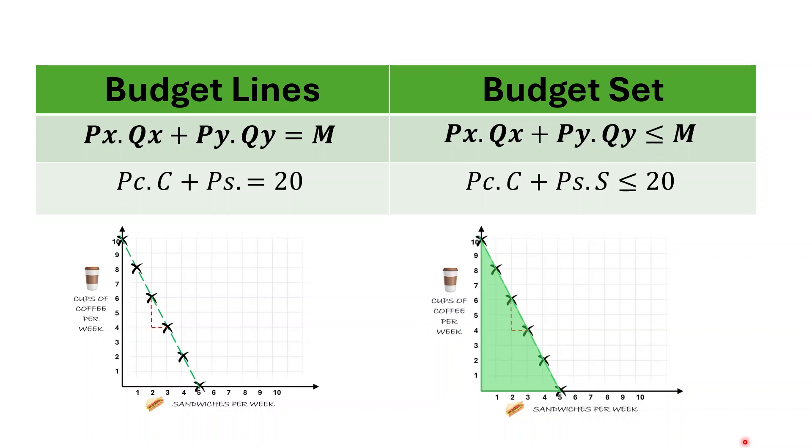It is important to understand the difference between the budget line and the budget set. First, the budget line. The budget line represents bundles or combinations of goods where the consumer spends his entire budget. These bundles lie strictly on the budget line. On the other hand, the budget set includes all feasible bundles that the consumer can afford with his limited income. So, these bundles can either lie on the budget line or even below it where some of the budget might remain unspent. So, in short, the budget line shows full utilization of the money while the budget set represents all different combinations within the consumer's budget.